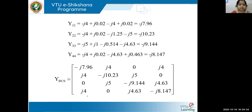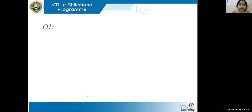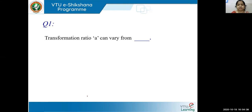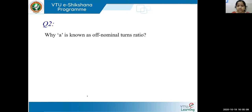Now for a quiz. Question 1: The transformation ratio A can be varied from 0 to 1. Question 2: Why is A known as the off-nominal turns ratio? — Because this voltage ratio is not used for determining the ratio of base KV of the lines. Question 3: Why is the value of A very small? — Because the regulating transformer is used to boost line voltages by only plus or minus 10% of the transmission line voltage.